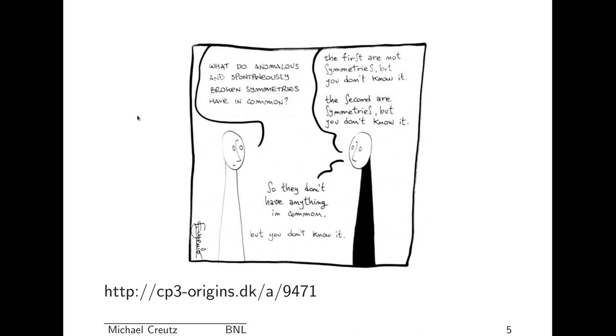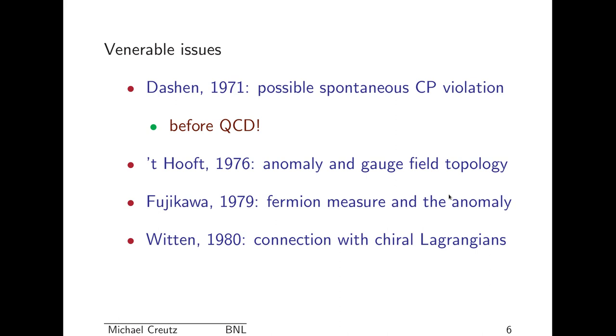So what do anomalies and spontaneously broken symmetries have in common? The first are not symmetries, but you don't know it. The second are symmetries, but you don't know it. So they don't have anything in common, but you don't know it. I stole this slide from a CP3 Origins seminar a few years ago. Now these are really old ideas. Way back in 1971, Dashen argued that CP violations could be spontaneously broken in the strong interactions, and we will see as we proceed how that can happen. And this is even before QCD, which is pretty amazing.